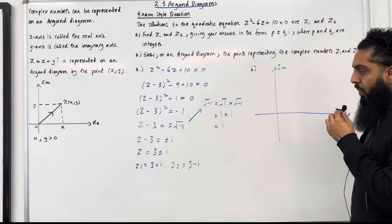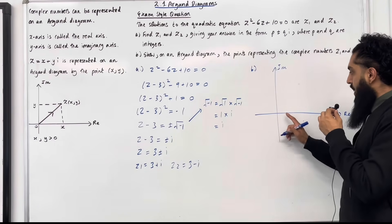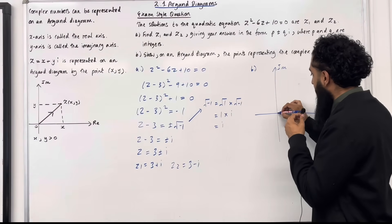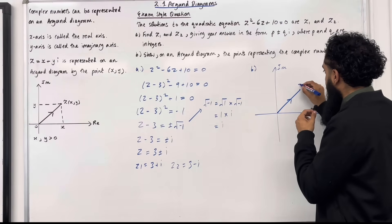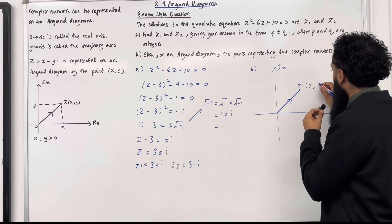Let's begin with z₁ which is 3 + i. So z₁ is 3 + i: 3 along the real axis and 1 along the imaginary axis. My complex number looks something like this. This is my z₁. I can write it as a coordinate and the coordinate will be (3, 1).